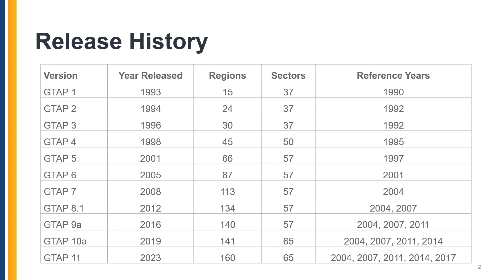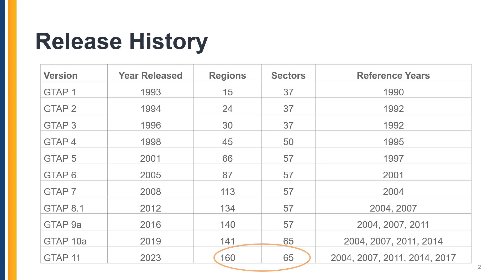The GTAP database has come a long way since it was first released in 1993. Version 1 only had 15 regions and 37 sectors, while the latest release, GTAP 11, contains 160 regions and 65 sectors. Over the last three decades, the number of regions has increased almost tenfold, while the number of sectors has nearly doubled.